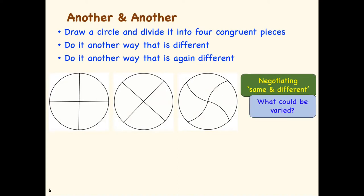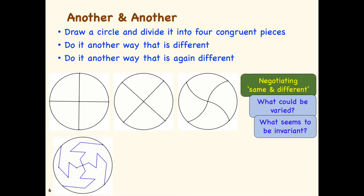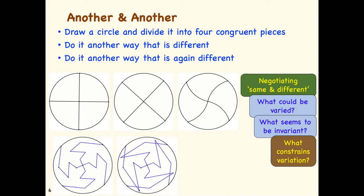Then you can ask yourself, what can be varied? And not only what can be varied, but what seems to be invariant? Often people end up with something a bit like that and they are tempted to say, oh, so you start at the center and draw any path to the edge. Repeat that round four times and you'll have your four congruent pieces. Well, not quite because there's some constraints on the variation. Namely, they mustn't overlap. So, as well as offering opportunity to pay attention to how your attention shifts and what you're attending to and how you're attending to it, there's also an opportunity to realize the power of the personal narrative, your self-explanation and how you might modify that at various times.